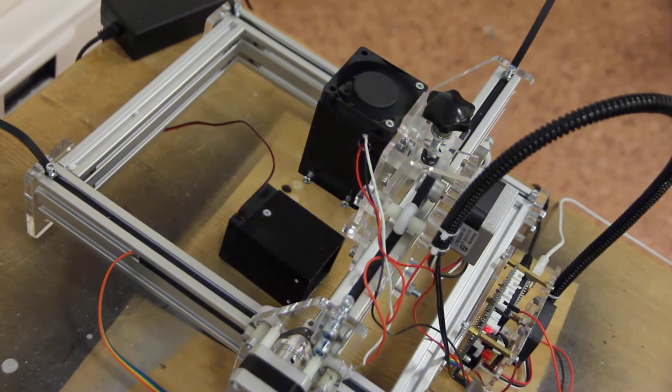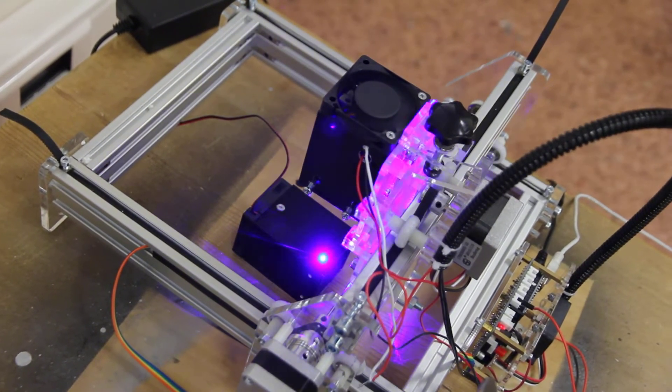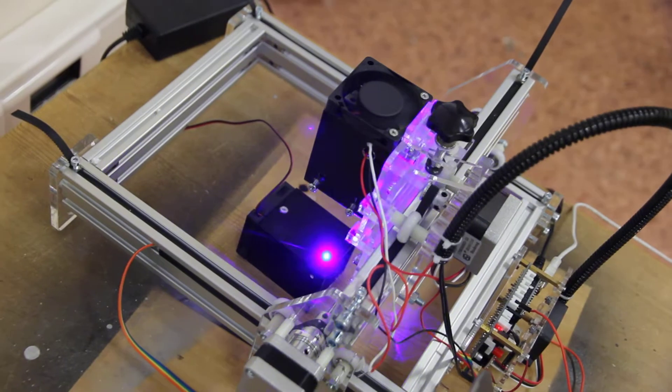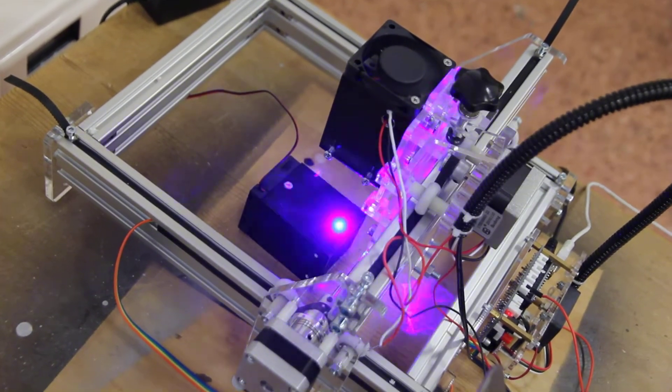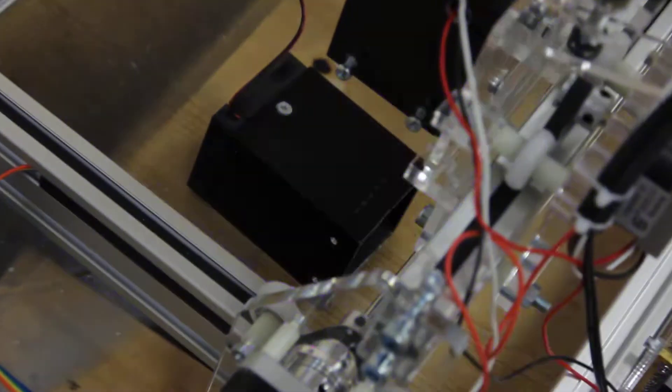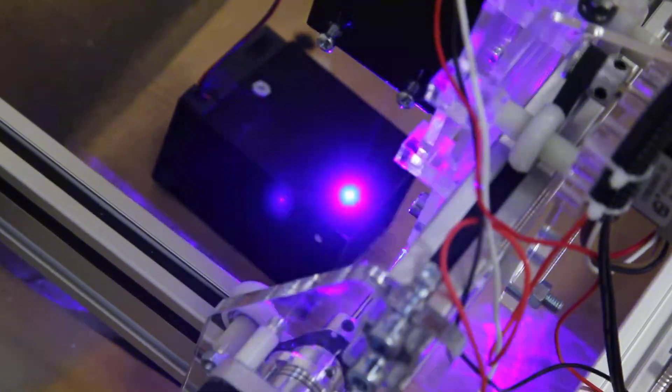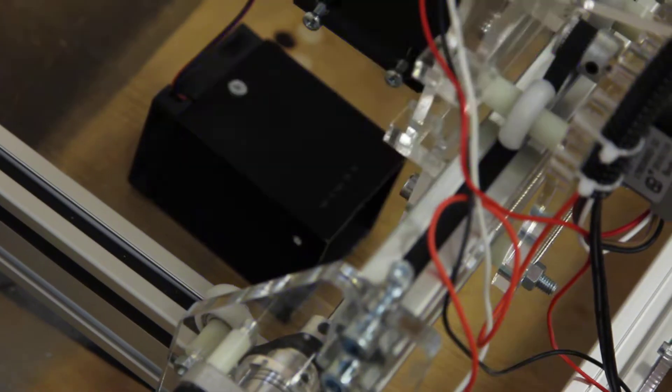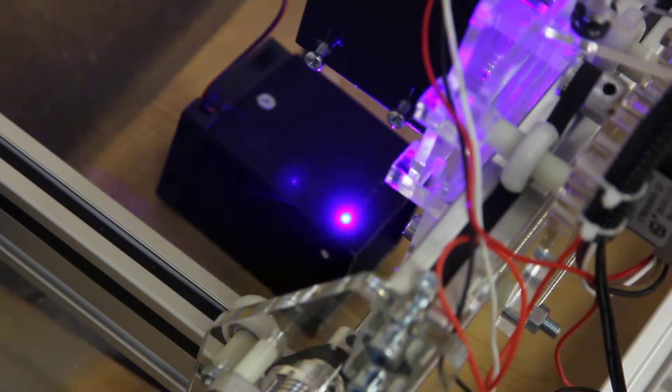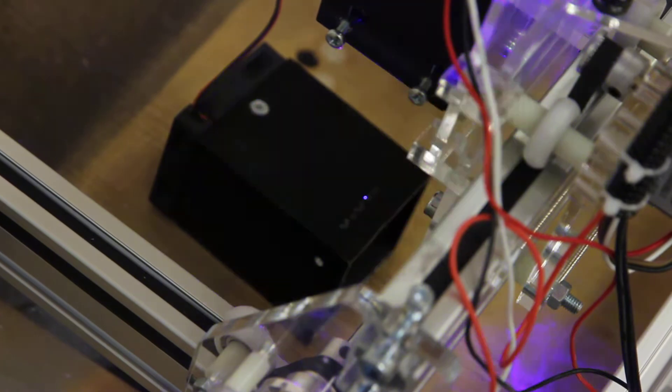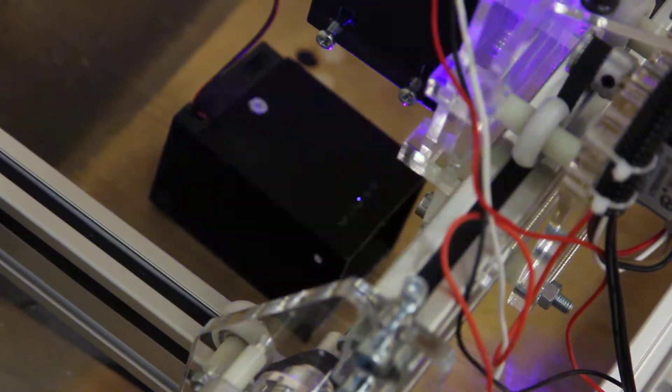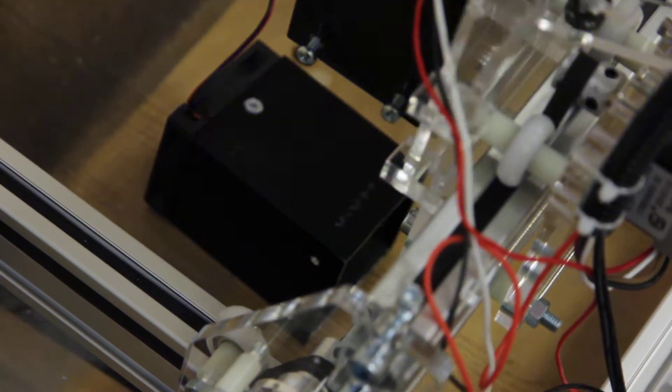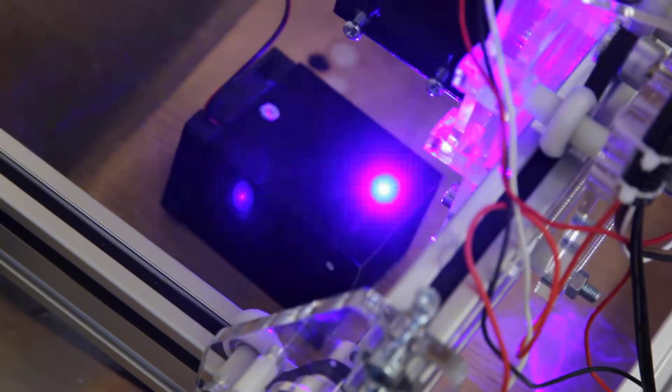This is a DIY engraving machine with a 5.6 watt diode laser assembled by Endurance. You can see that it does pretty well and works pretty fast. It takes about a minute or so to engrave on this piece.